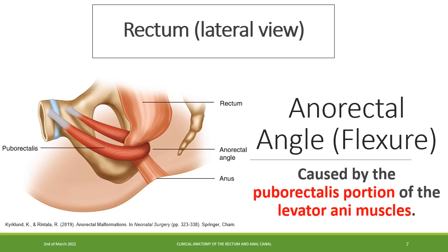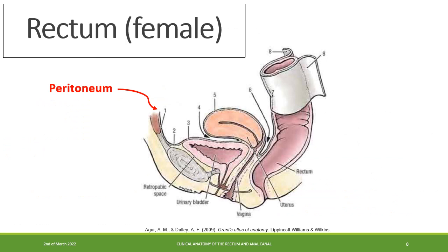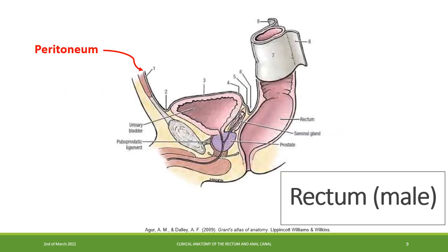The anorectal flexure is caused by the puborectalis portion of the levator ani muscles. The peritoneum covers the anterior and lateral surfaces of the first third of the rectum, and only the anterior surface of the middle third, leaving the lower third devoid of peritoneum. This arrangement is the same in both males and females.